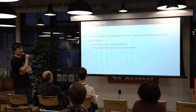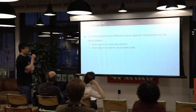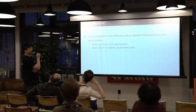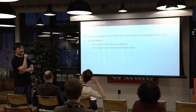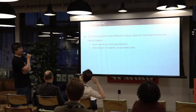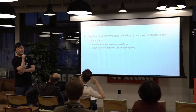This leads us to realize we need 'value capture' — as layer-one protocol designers, we want to make sure the platform captures part of the economic value of the ecosystem running on top of it. We also thought about value capture in the context of forks: when a fork happens, what's the advantage of the canonical chain against the fork, and how can we prevent the value of the blockchain from being diluted or forked away?